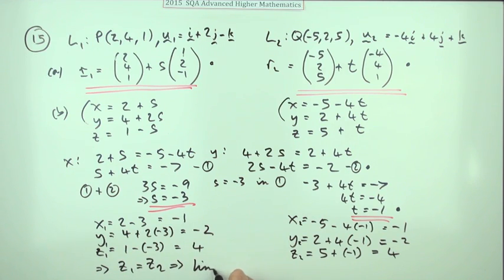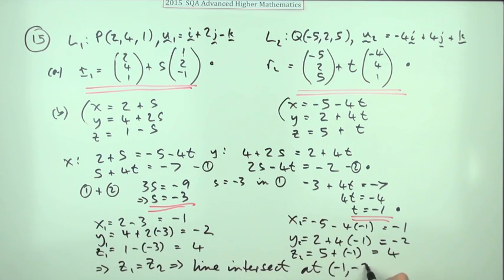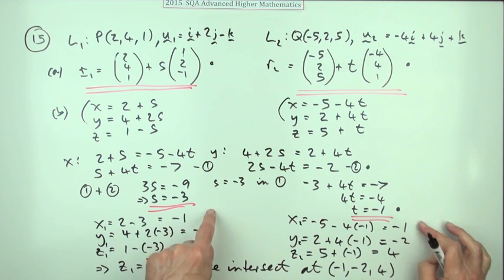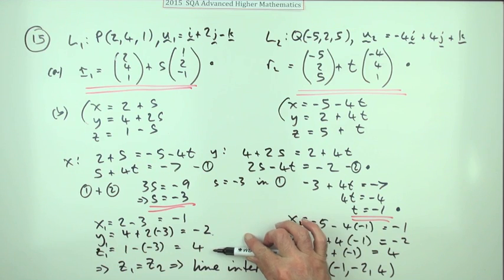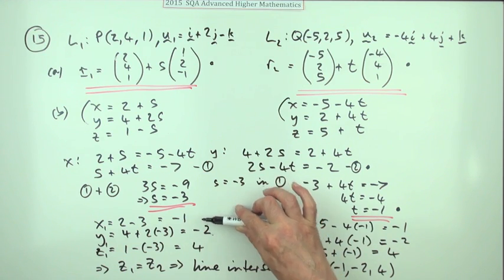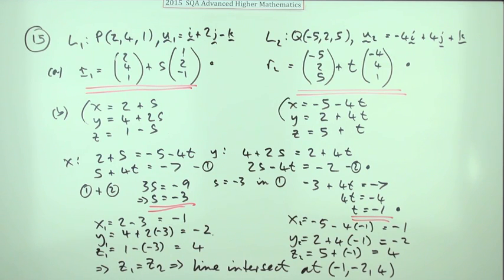Since z1 equals z2, the lines intersect, and the point of intersection is (−1, −2, 4). Both final marks are here: one for the point of intersection and one critically for showing the z-coordinates are equal — that's the mark that confirms they truly intersect rather than being skew.